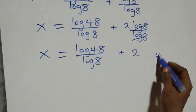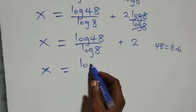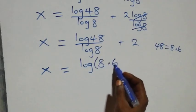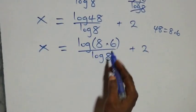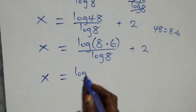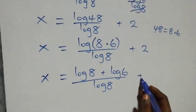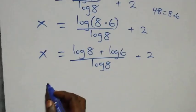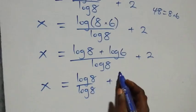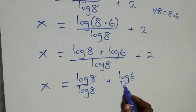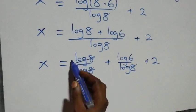We rewrite forty-eight as eight times six, so x equals log of eight times six over log eight, plus two. By the product rule of logarithms this becomes log eight plus log six, all over log eight, plus two. Separating into two fractions gives log eight over log eight plus log six over log eight, plus two. Log eight over log eight equals one.